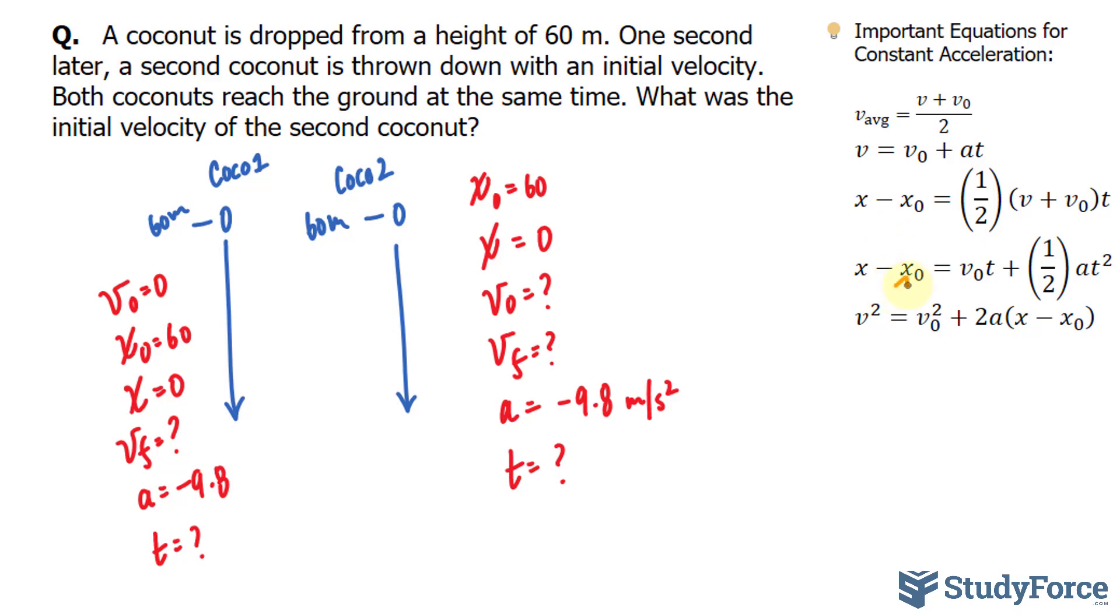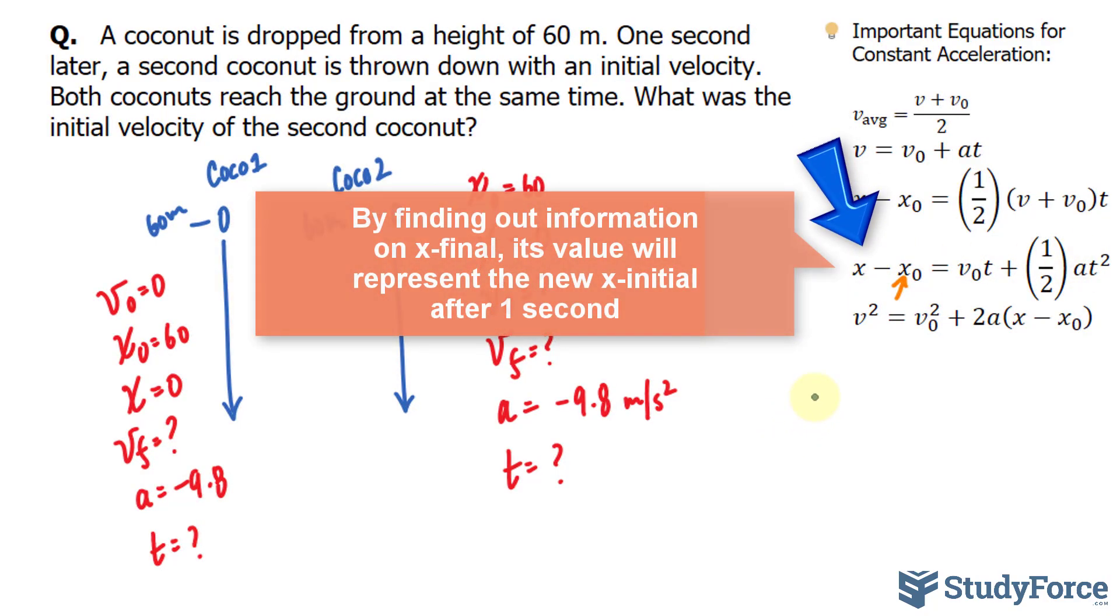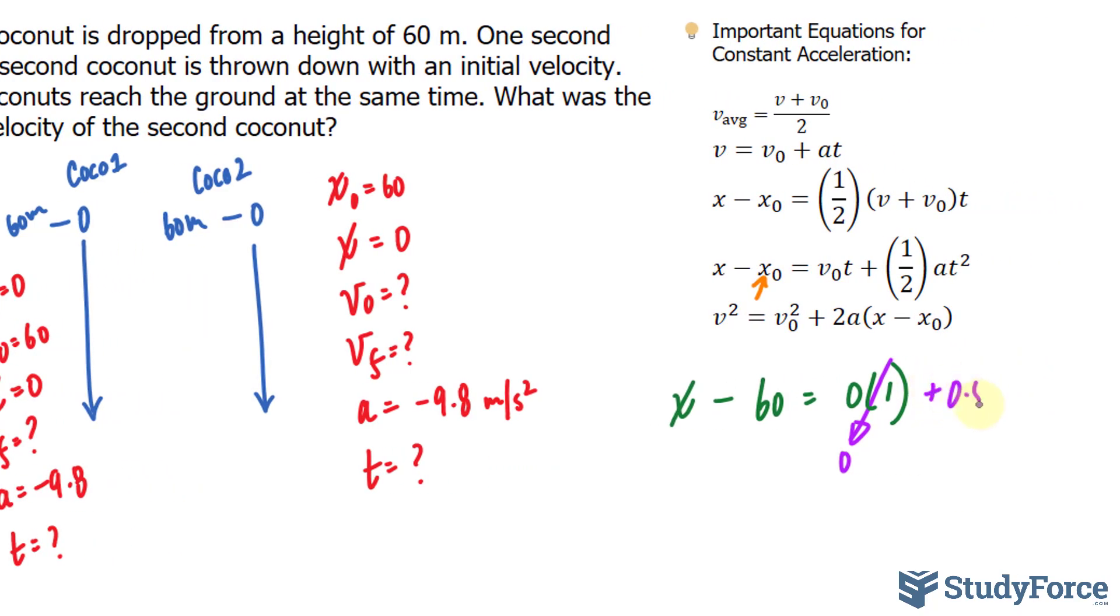So I need to find out x initial. So I'll be using this formula. X is what we're looking for. We know that the initial height was 60 equals the initial velocity, which happens to be zero, times after one second. Multiplying these two gives you zero, so we can forget about that moving forward, plus 0.5 times the acceleration due to gravity, negative 9.8 times one raised to the power of two.